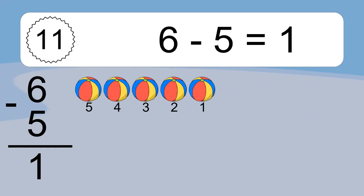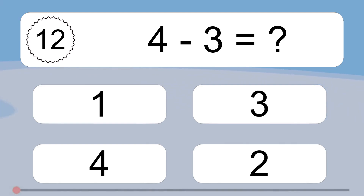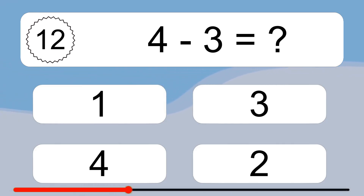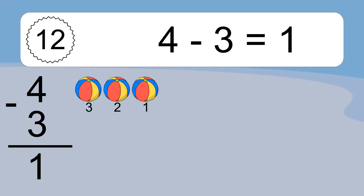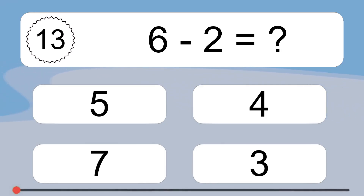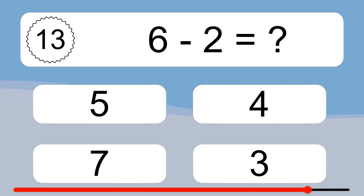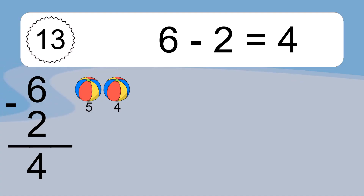6 minus 5 equals what? 6 minus 5 equals 1. Let's count it: 5, 4, 3, 2, 1. 4 minus 3 equals what? 4 minus 3 equals 1. Let's count it: 3, 2, 1. 6 minus 2 equals what?